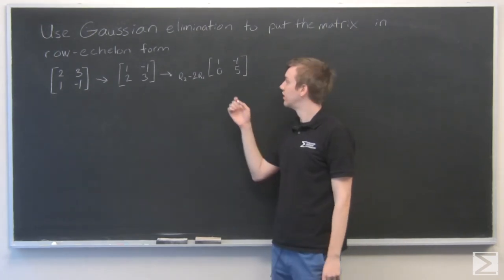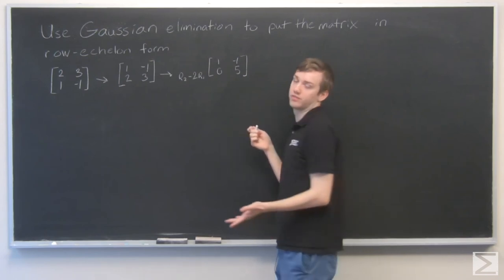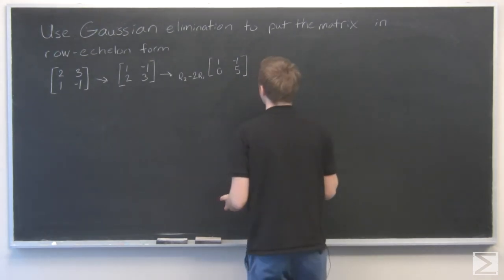Now we have, we're almost there. We just have this five that I want to multiply by one fifth now to get that down to a one.